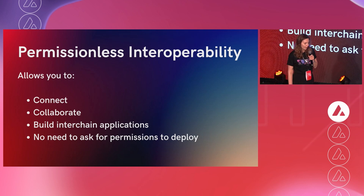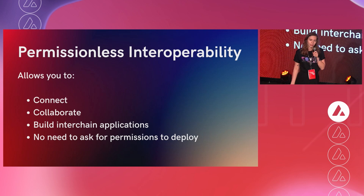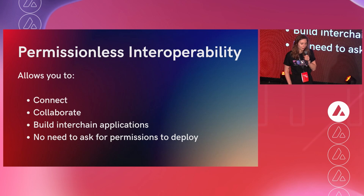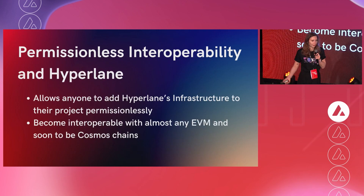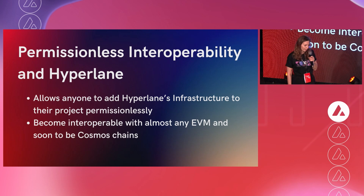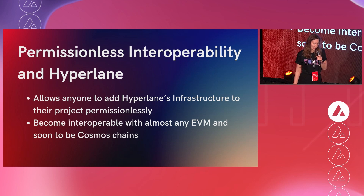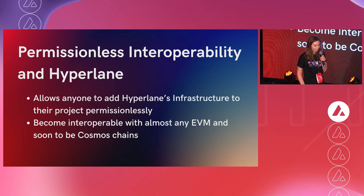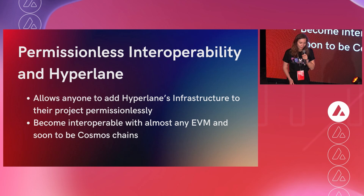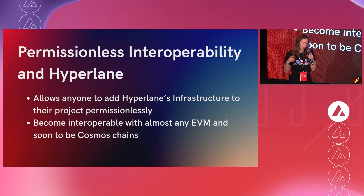Permissionless interoperability allows you to connect, collaborate, and build interchain applications. It's actually very simple to build permissionless interoperable applications. Anyone can plug Hyperlane infrastructure into any project, which makes it interoperable with any EVM chain. We're also building a Cosmos module as well, so you'll be able to connect any protocol to a Cosmos chain very soon.